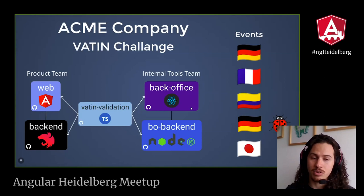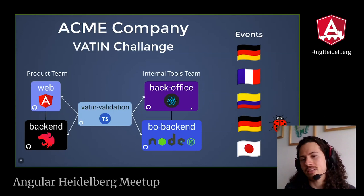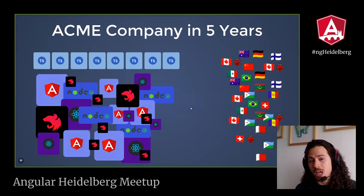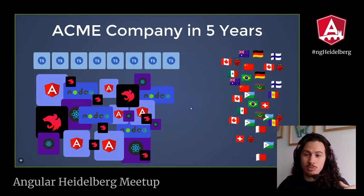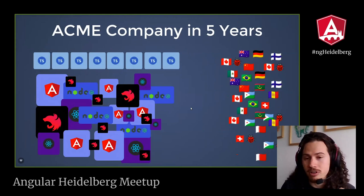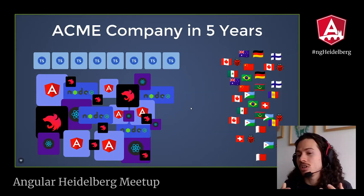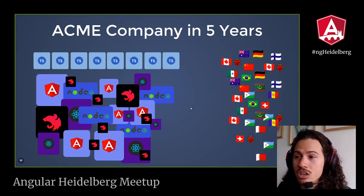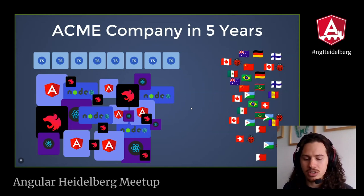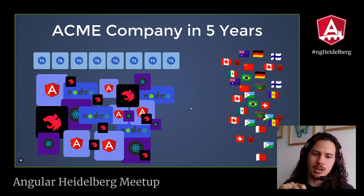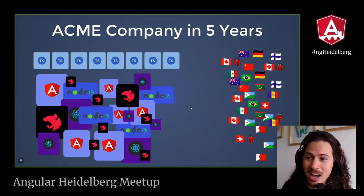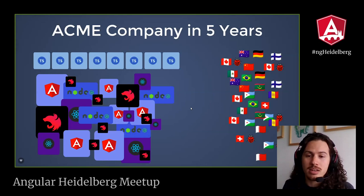Imagine our company in five years — we are going to be in a lot of countries. Maybe we find bugs. Our organization is not that simple anymore — maybe we have dozens of repositories for applications and dozens of libraries. So it is kind of complicated to manage the pull requests, to version the packages. And we are not going to have only one shared library — maybe we are going to have several. That management is going to be complicated and complex.